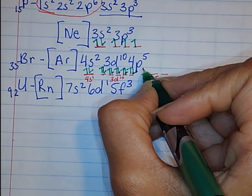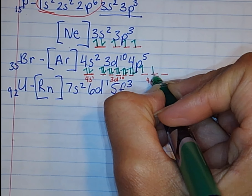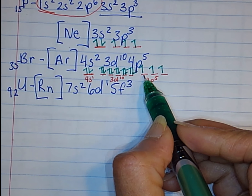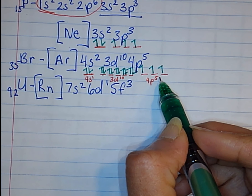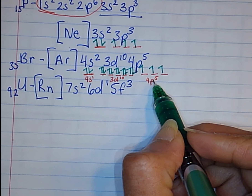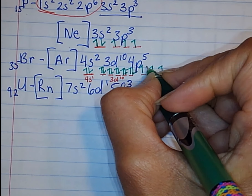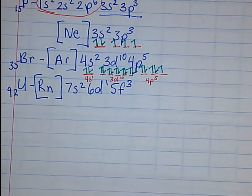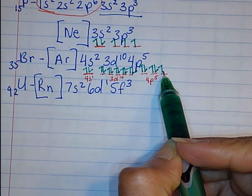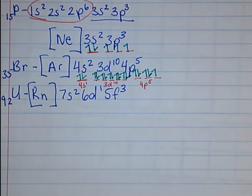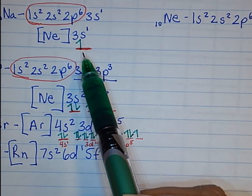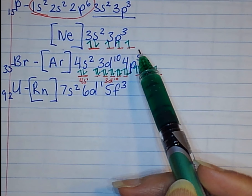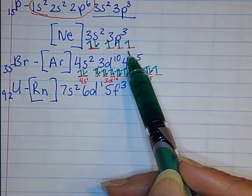For 4p5, we follow Hund's rule first: electrons one, two, three each take a separate orbital. Then we go back with Pauli exclusion — electrons four and five spin in opposite directions pairing up. So we have one orbital that doesn't have a paired electron, and that's okay — the same thing happened with sodium and phosphorus where some orbitals did not pair up.